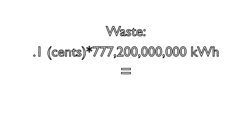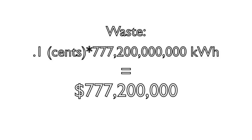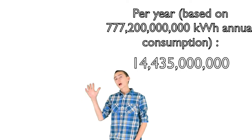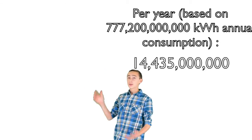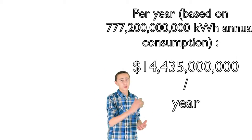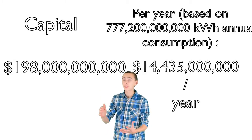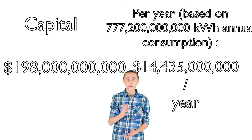Storing the radioactive uranium and plutonium waste costs approximately a tenth of a cent per kilowatt-hour, meaning 0.1 times 777 billion 200 million kilowatt-hours costs approximately 777 million 200 thousand dollars. The capital cost to build each plant is approximately two billion dollars. When you add this all together, nuclear power in the United States costs 14 billion 435 million 200 thousand dollars per year, plus an additional 198 billion dollars for the existing infrastructure.